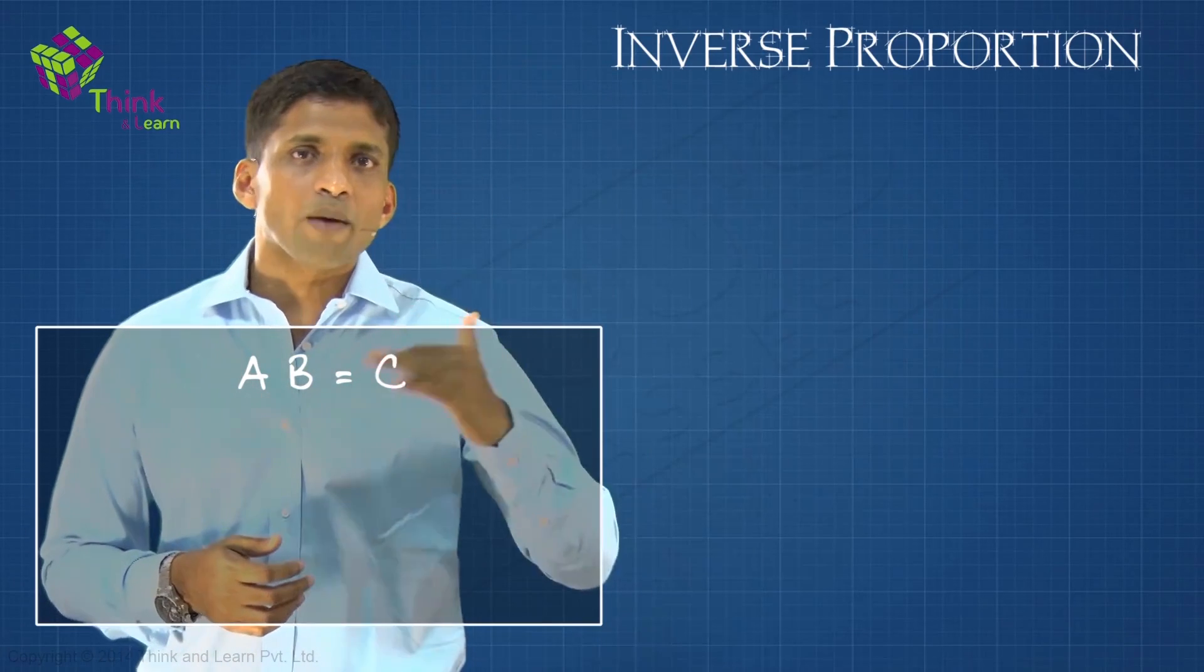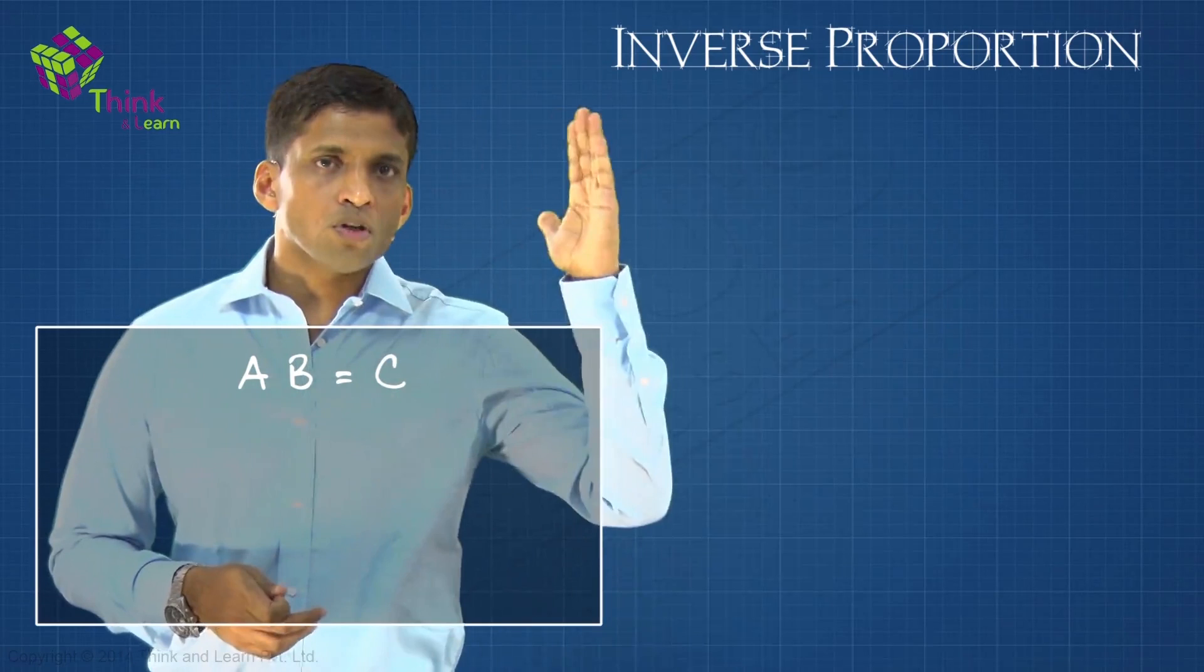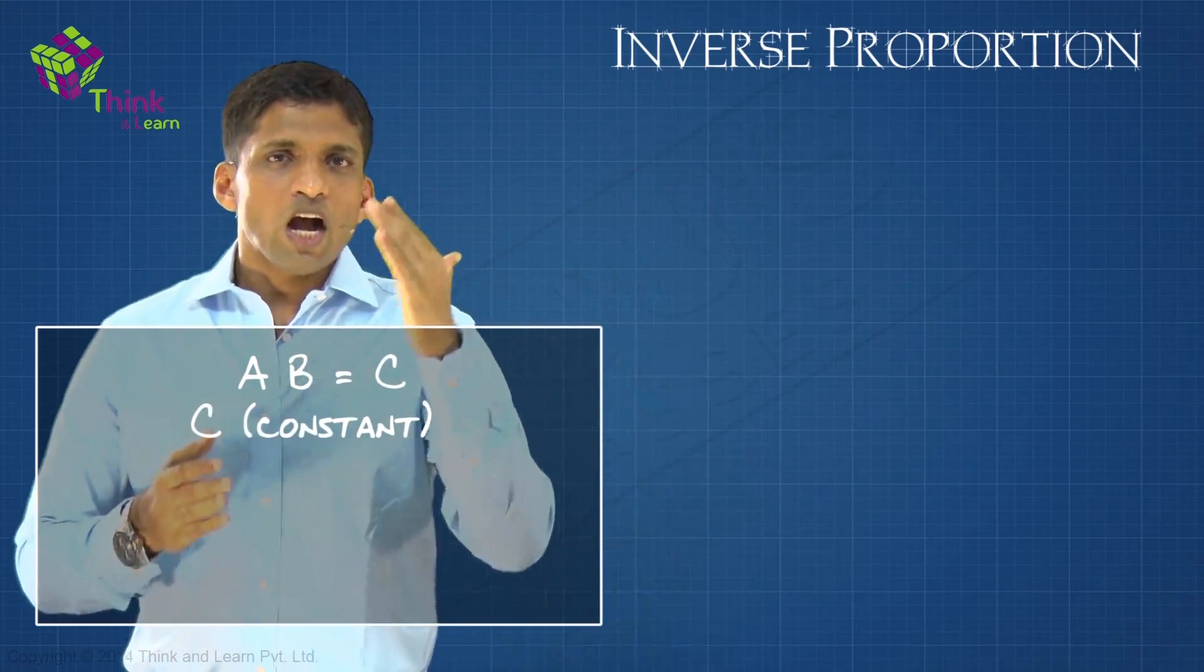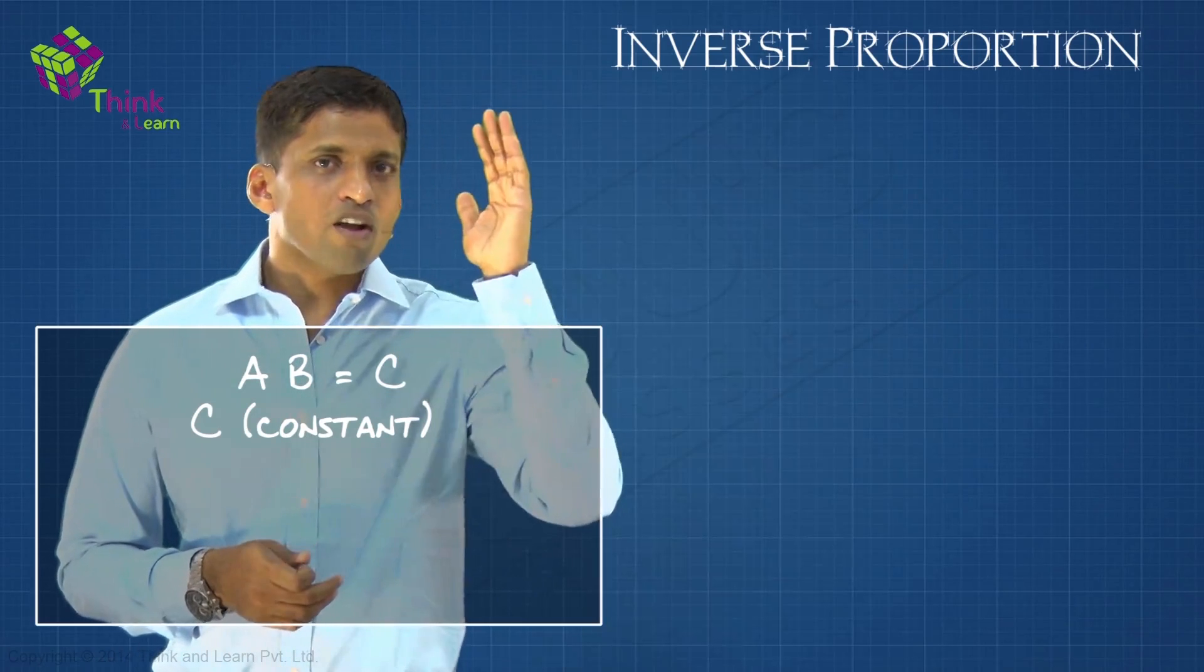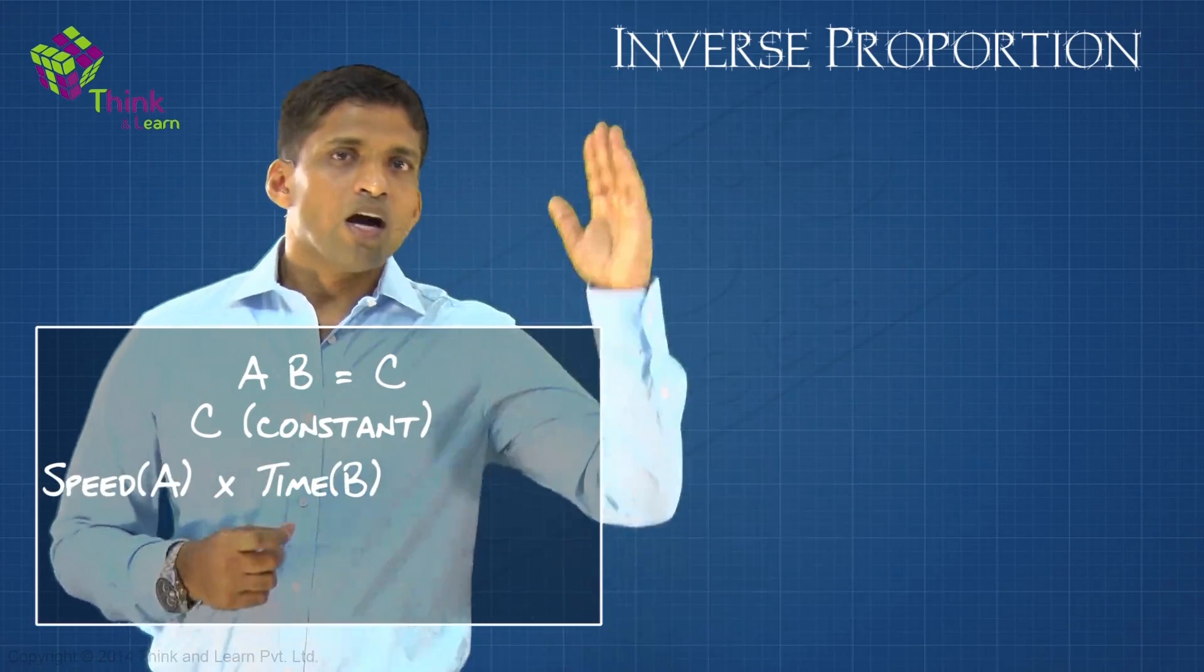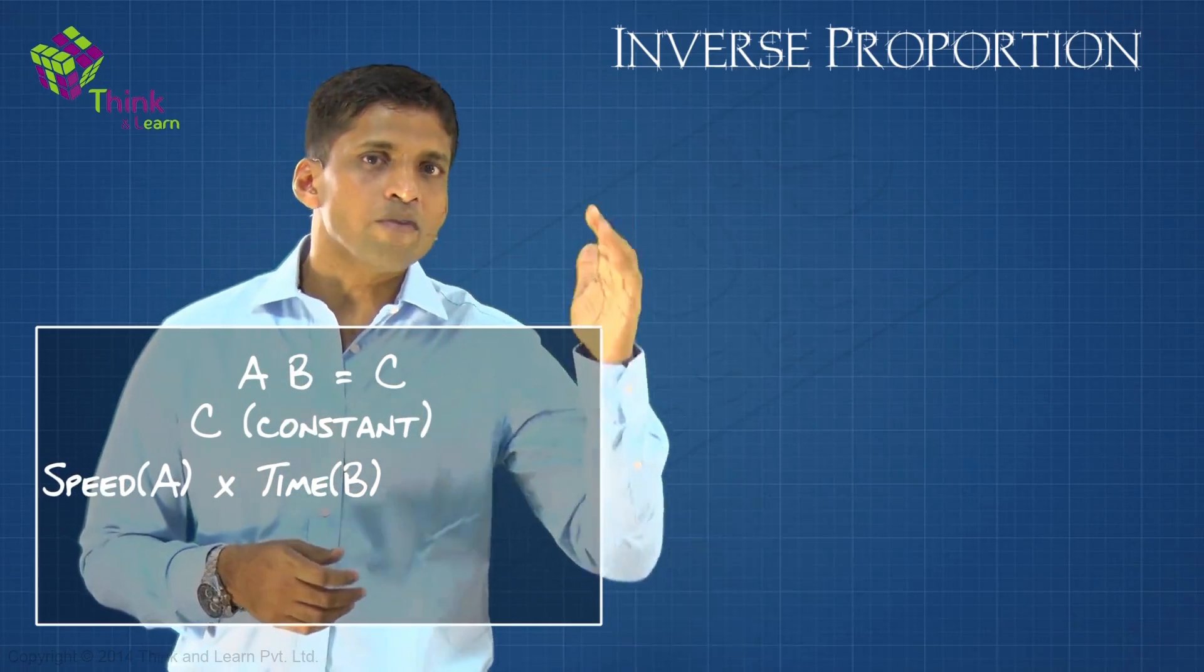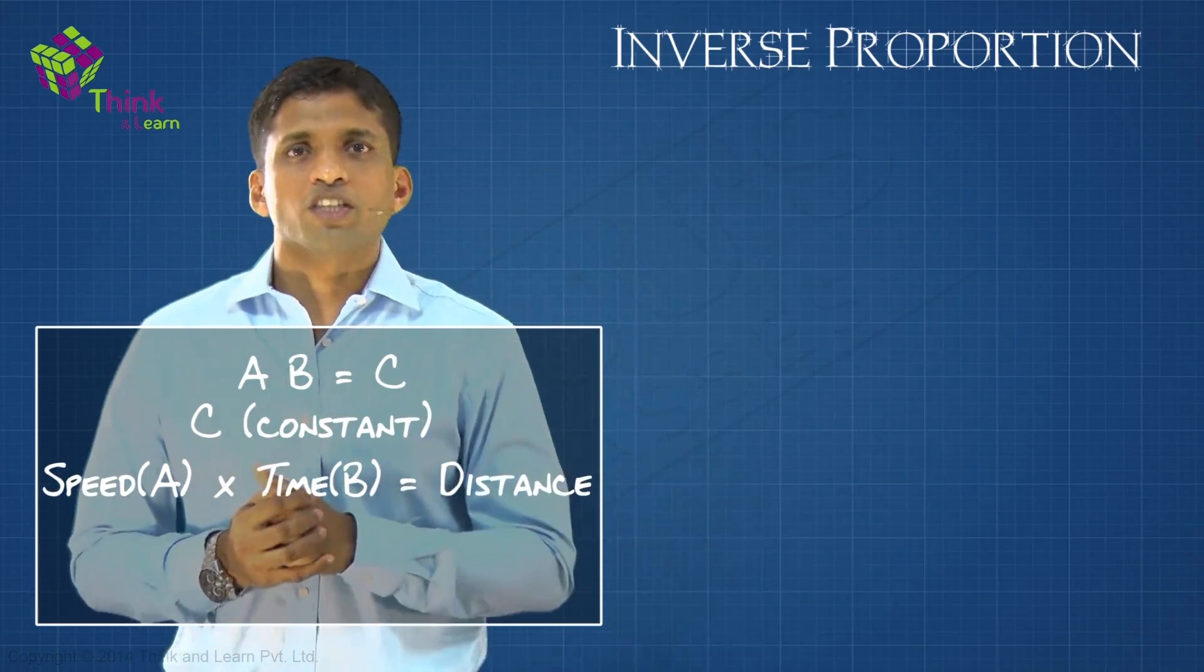So A × B = C, where C is constant. Using words, I can easily replace A by speed, and if I replace A by speed and B by time, what is C? Speed into time is distance. Now, if distance is constant, if it is fixed, let's say the distance from your home to school.